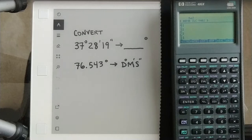Alright, let's look at how we would convert degrees, minutes, and seconds over to decimal degrees and then vice versa.